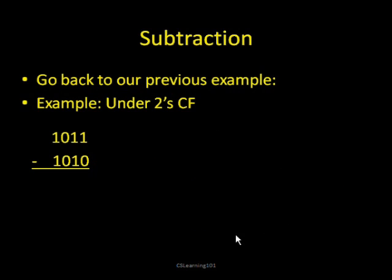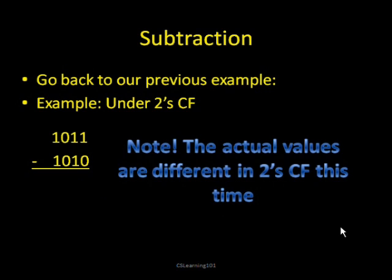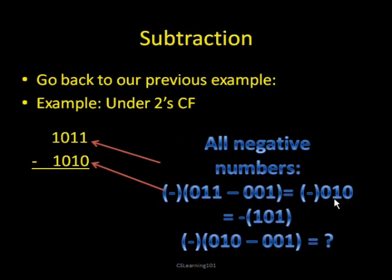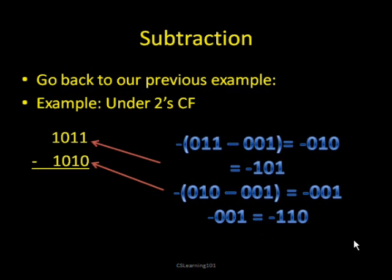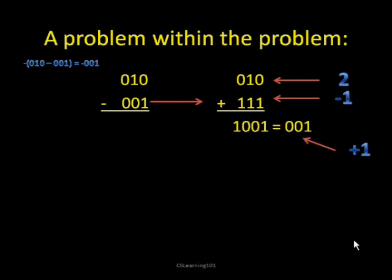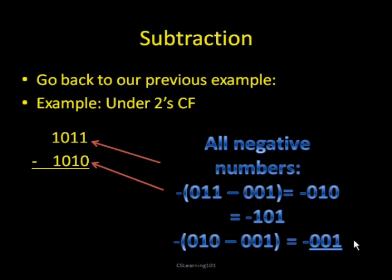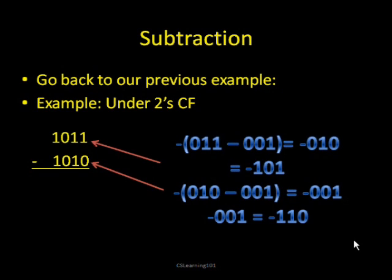Now we're going to do subtraction again with 2's complement. Keep in mind that the values are different in 2's complement than in 1's complement. To convert from 2's complement to the opposite, we subtract 1 and then flip the digits — the reverse of what we did in 2's complement. In this case we have to minus 1 from it. After all that math, we see that we are doing negative 5 minus negative 6, which is the same as negative 5 plus 6. This comes out to 1001, which equals 0001 under 2's complement — the right answer.